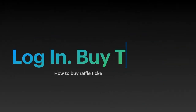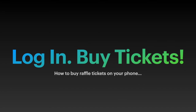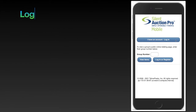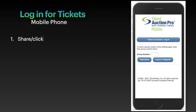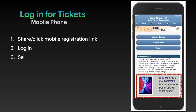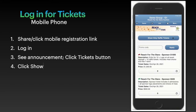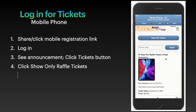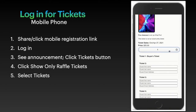Now that your ticket is created and your announcement is placed, let's log in and buy some tickets. You're either going to access Silent Auction Pro from a link that was shared to you, or you already have an account — click the I have an account button and log in. Notice the announcement that indicates the raffle tickets. Click the tickets button above and filter, then select your raffle tickets, scroll to the bottom and click checkout.